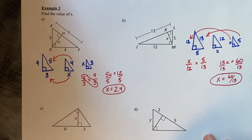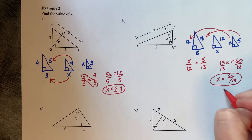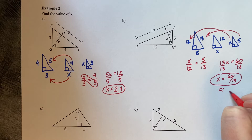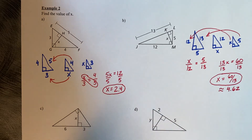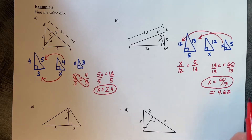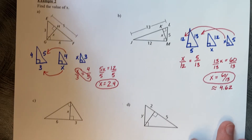To leave it as an exact answer, I'm going to leave it as 60 thirteenths. If you type that into a calculator, an approximate answer would be 4.62 if you round to the nearest hundredths place.